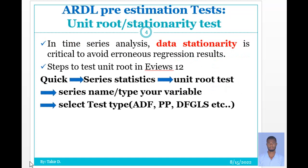The other pre-estimation test is the unit root or stationarity test. In time series analysis, stationarity is critical to avoid erroneous regression results. Therefore, you should employ stationarity tests before regression analysis. The steps to test for stationarity using the ARDL model or any other model are: click on Quick, then Series Statistics, then Unit Root Test. You are then required to type your series name, and then select the test type.